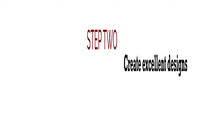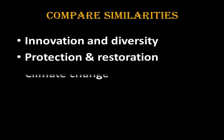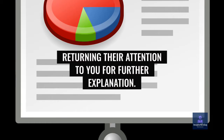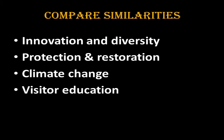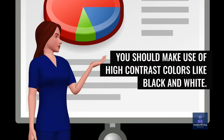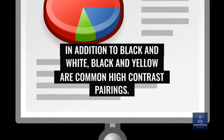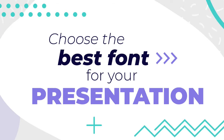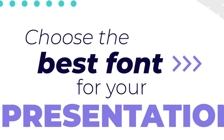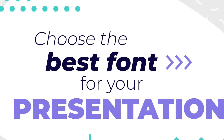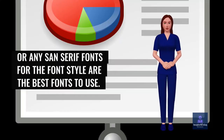Step 2: Create excellent designs. There are specific rules you must follow to create a great PowerPoint design. First, always use one concept per slide. Having only one point on each slide helps your audience quickly comprehend your message before returning their attention to you for further explanation. Also, make use of bullet points, which should be very consistent. For colors, use high contrast colors like black and white, or black and yellow, which are common high contrast pairings. For font style, Tahoma, Verdana, Impact, Georgia, Latteau, ITC Souvenir, Arial, or any sans-serif fonts are the best fonts to use.